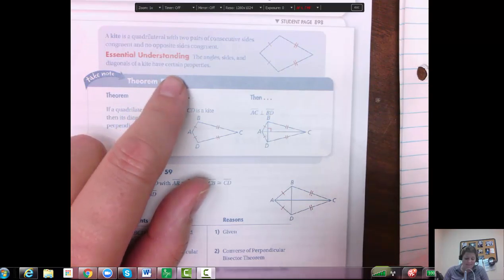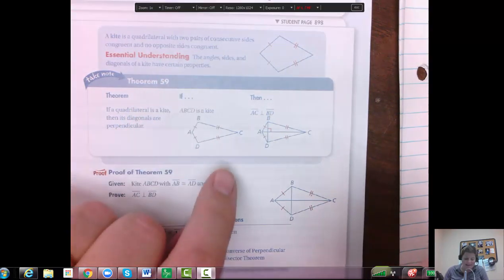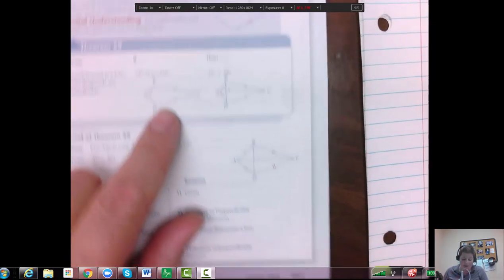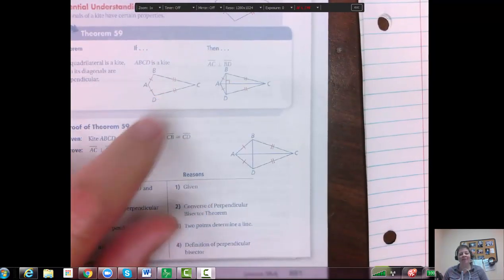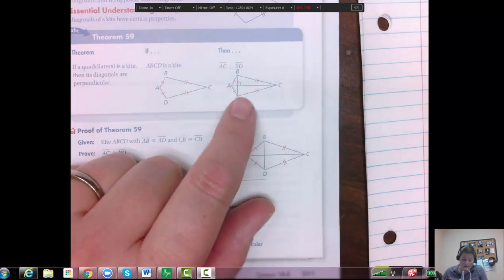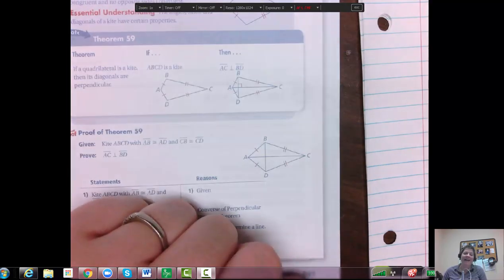So let's look at, we know a couple things if we know it's a kite. So if we have those adjacent congruent sides, two pairs of congruent sides, then we also know that the diagonals meet at a 90 degree angle. That's super convenient and we can use that with some of our problems.